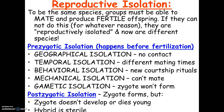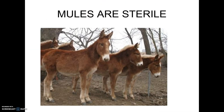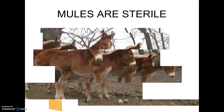So those are all reasons why two groups of organisms would be considered separate species. This is also true of ligers, which are also sterile, as are zedonks — the zebra-donkey hybrid — also sterile. So they are separate species.